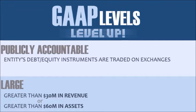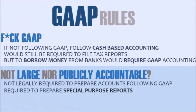An entity is considered publicly accountable if their debts or equity instruments are traded on exchanges — the public needs to be protected. An entity is considered large in New Zealand if they have greater than 30 million in revenue or 60 million in assets. Overseas companies may have higher limits. Under the new FRA, if an entity is not publicly accountable or large, legally they will only be required to prepare special purpose reports.